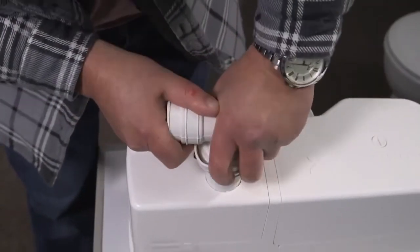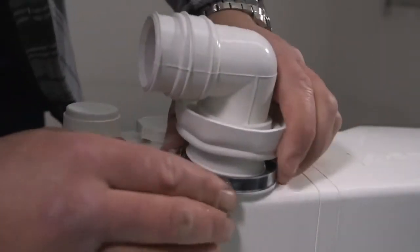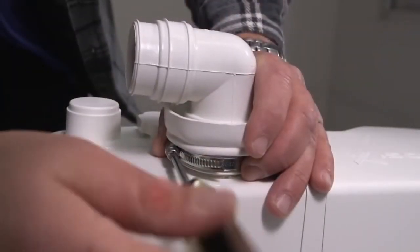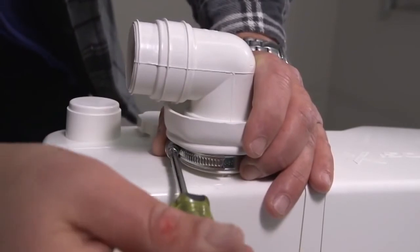Push on the outlet connection elbow, again using soapy water if required. Tighten the jubilee clip and pull over the secondary seal cover.